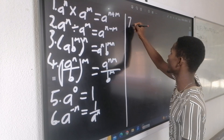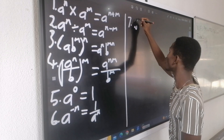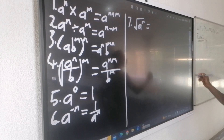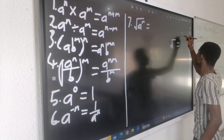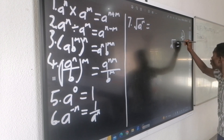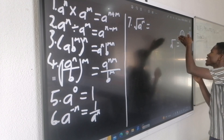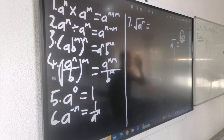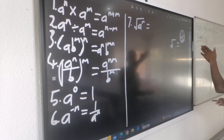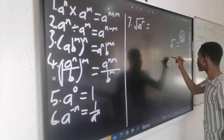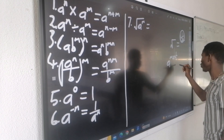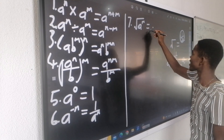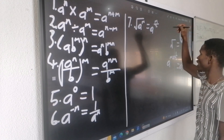Exponential law number 7 says: square root of A to the power M. Always know that square root equals exponent of 1 over 2 — not a base, but exponent of 1 over 2. Square root means the index is 2, and that 2 is the one we're talking about. It will be A to the power M multiplied by 1 over 2, giving A to the power M over 2 as my final answer.